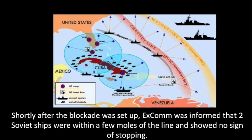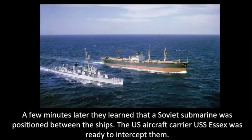Shortly after the blockade was set up, EXCOM was informed that two Soviet ships were within a few miles of the line and showed no sign of slowing down. A few minutes later, they learned that a Soviet submarine was positioned between the ships. The US aircraft carrier USS Essex was ready to intercept them.